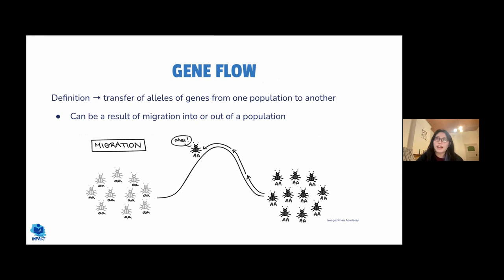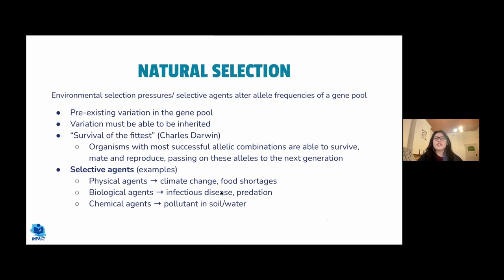Gene flow is the movement of alleles between populations. For example, in a population of white beetles (allele combination aa) and a population of black beetles (AA), if a black beetle migrates into the white beetle population, this introduces the A allele into a population that previously had only a alleles — this is gene flow.